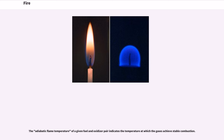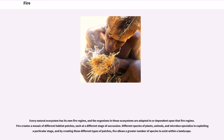Every natural ecosystem has its own fire regime, and the organisms in those ecosystems are adapted to or dependent upon that fire regime. Fire creates a mosaic of different habitat patches, each at a different stage of succession. Different species of plants, animals, and microbes specialize in exploiting a particular stage, and by creating these different types of patches, fire allows a greater number of species to exist within a landscape.